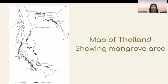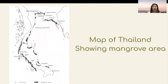This is the map of Thailand showing the areas of mangrove. The dark color indicates the extent of mangrove coverage, and the small circles represent the provinces where mangroves are present.